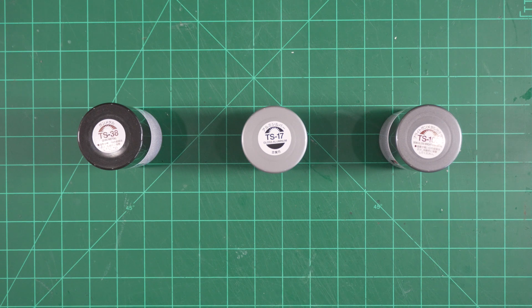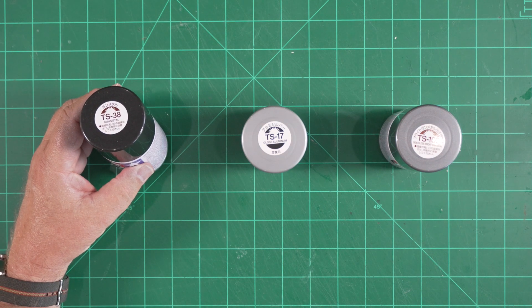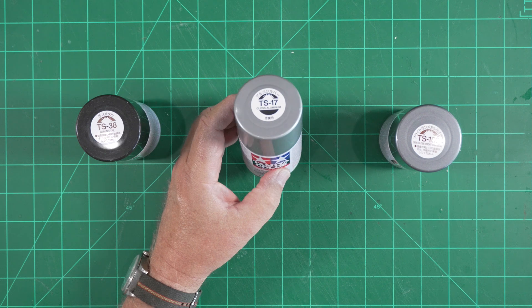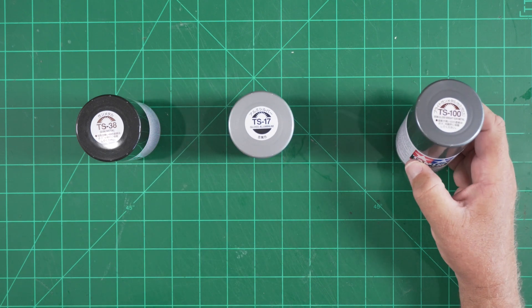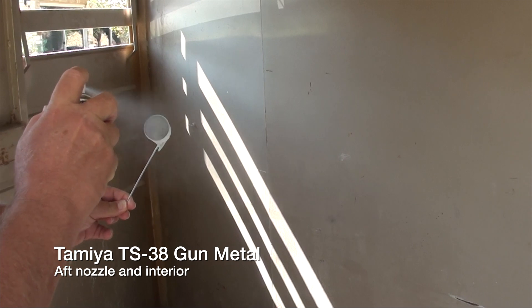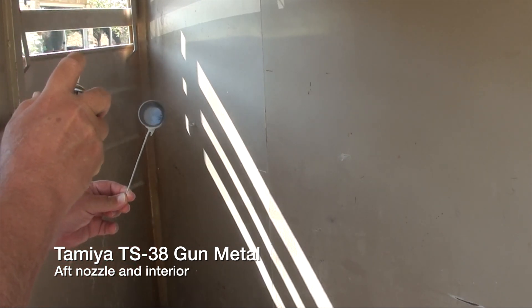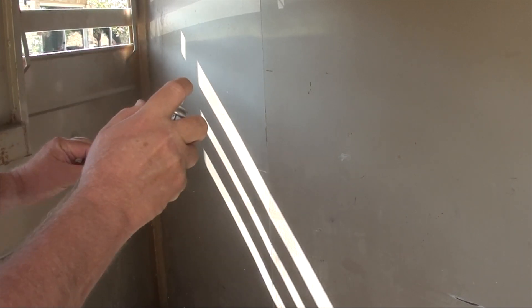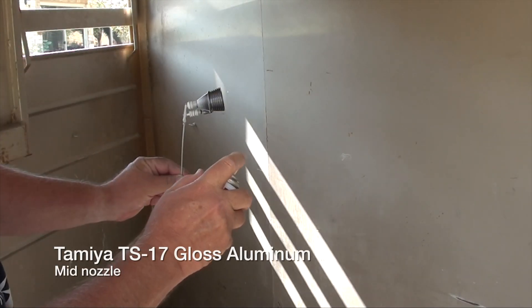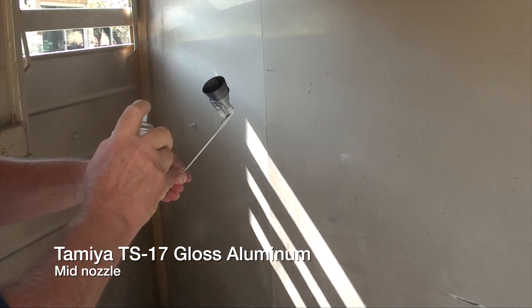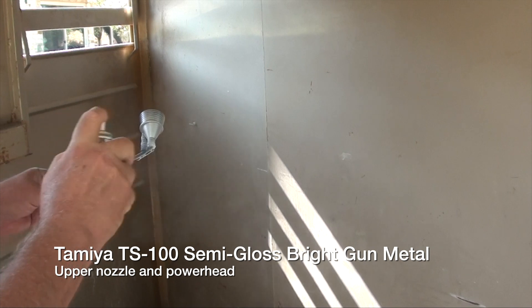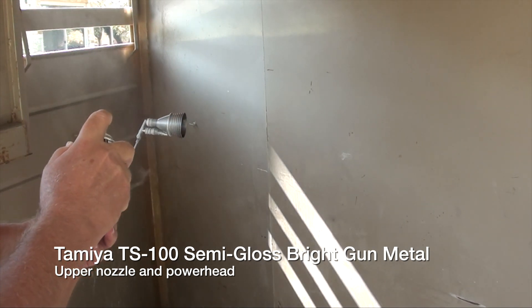To that end we're going to layer the lacquer on in multiple shades. We'll start by doing the aft portions of each nozzle in this dark gunmetal color. We'll then do the middle portions in this lighter gloss aluminum, and then finally we'll do the top end of the motor in this semi-gloss bright gunmetal. As the darker color goes on the aft nozzle, we make sure to get coverage inside the nozzle. The light shade then goes on the middle and our mid-tone is applied to the upper area. Notice that we've done no masking here. All of this is done freehand.